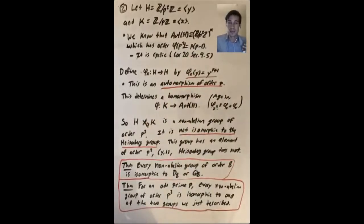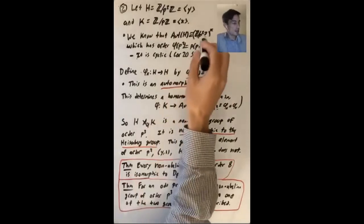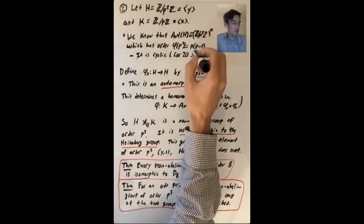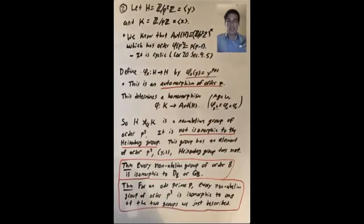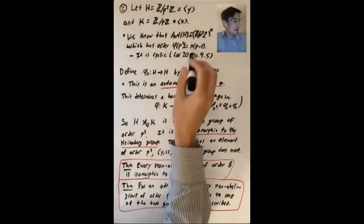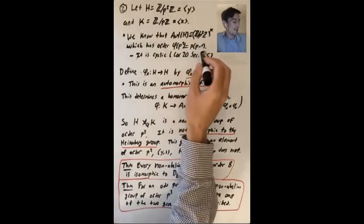It's the number of things relatively prime to p squared that are less than p squared. And the only things that are not relatively prime to p squared are the multiples of p. So it turns out that actually this group is cyclic of order p times p minus one. We don't need that for what we're going to do here.